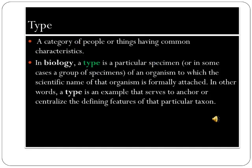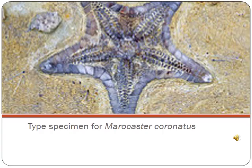What is a type? A type is a category of people or things having common characteristics. In biology, a type is a particular specimen of an organism to which the scientific name of that organism is formally attached. It also serves to anchor or centralize the defining features of that particular taxon. A type specimen for Marocaster cornucopiae is shown here.